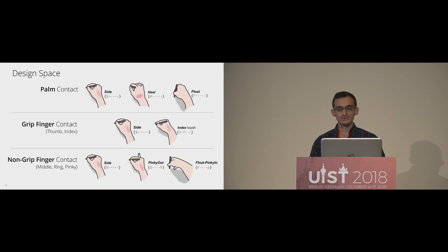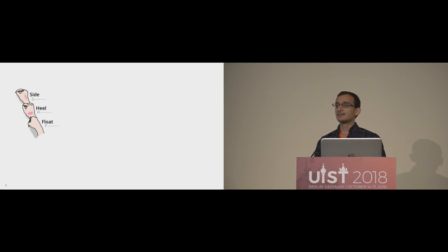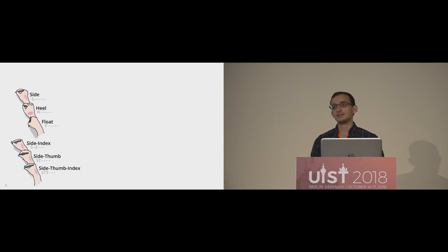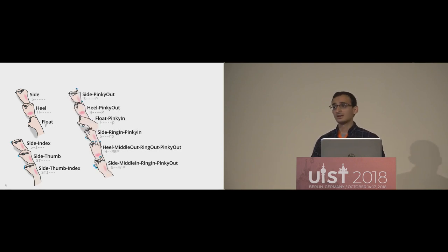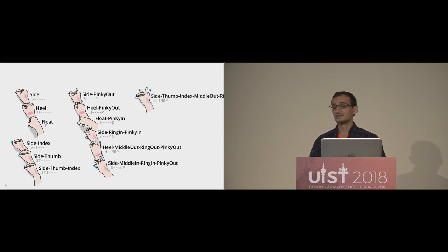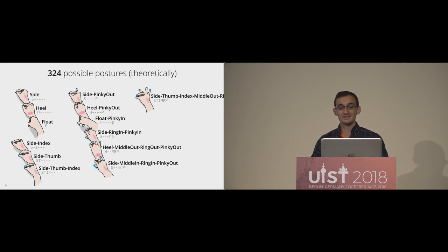A quick note: on this slide you'll see two forms of notation — a long form notation and a condensed notation, which we used in the paper. Any combination of these states is possible. From the basic palm states, those can be combined with any combination of grip finger states and non-grip finger states. For example, this posture here — side palm touching, thumb touching, index touching, middle out, ring out, and pinky out — gives us 324 theoretically possible postures for how your hand can touch the screen.